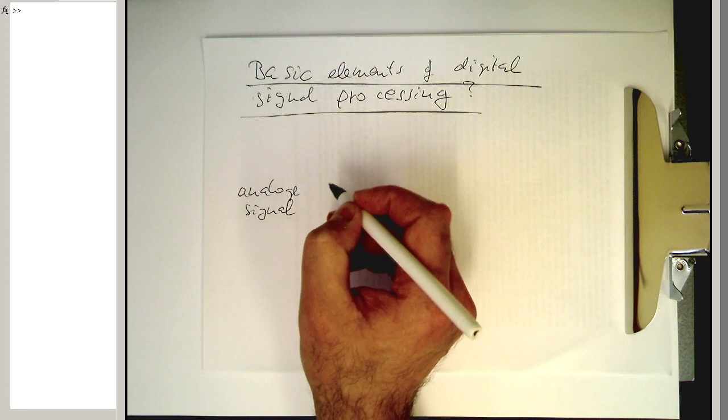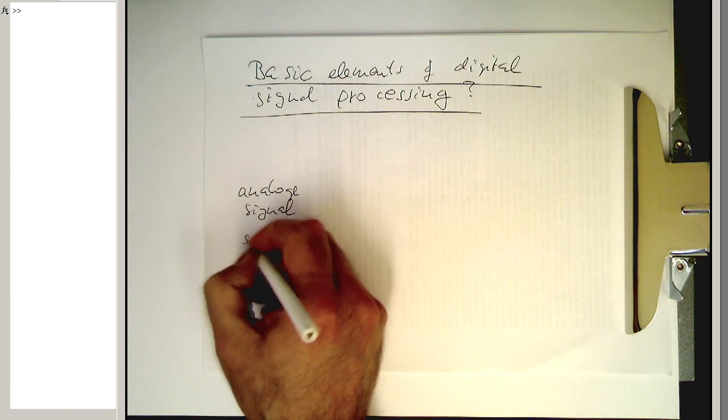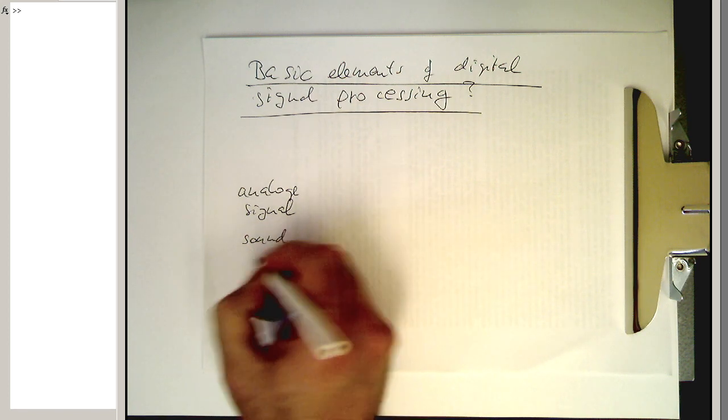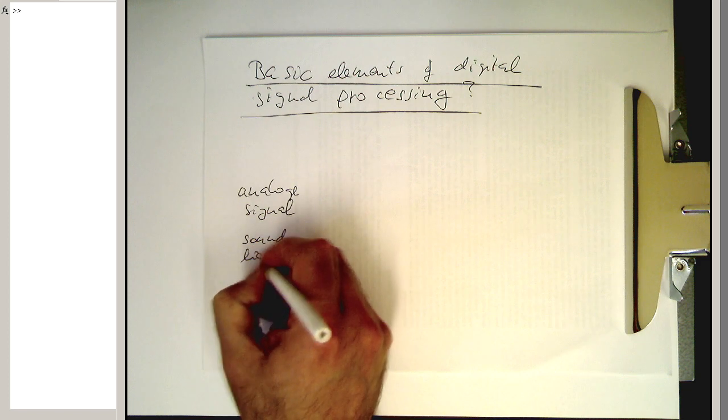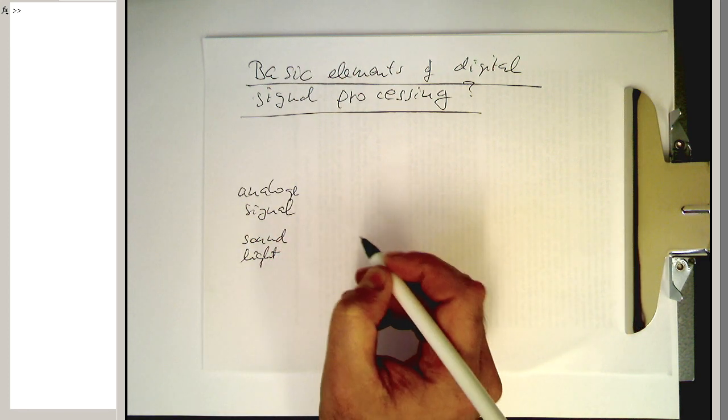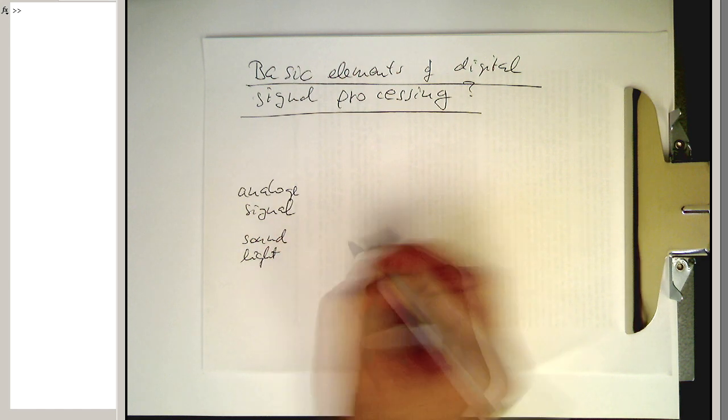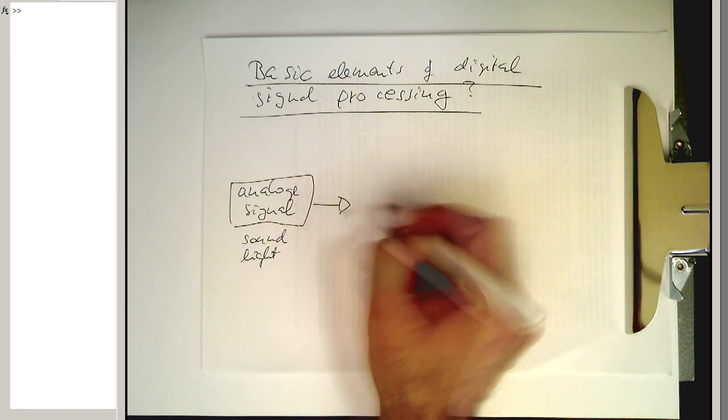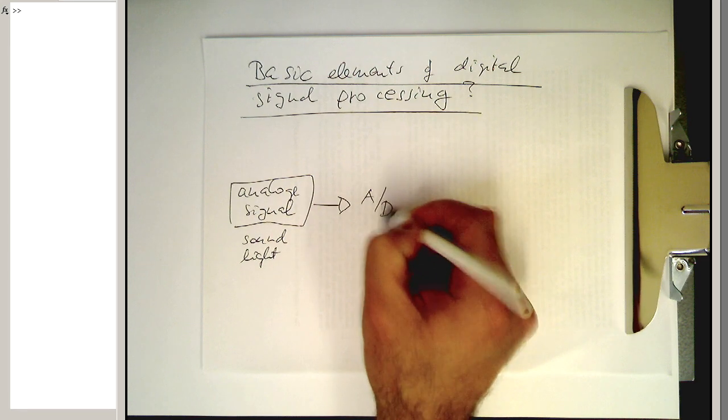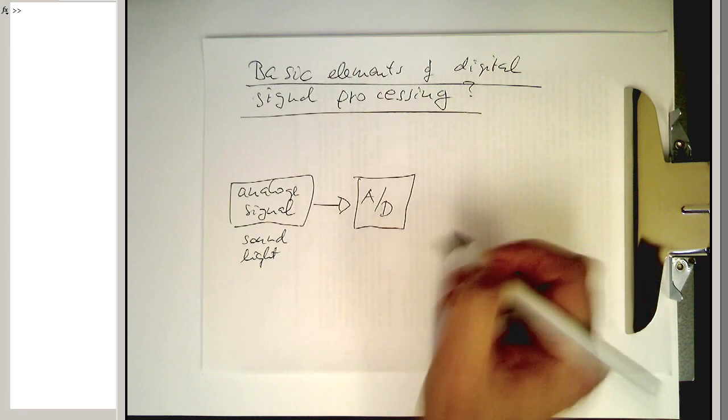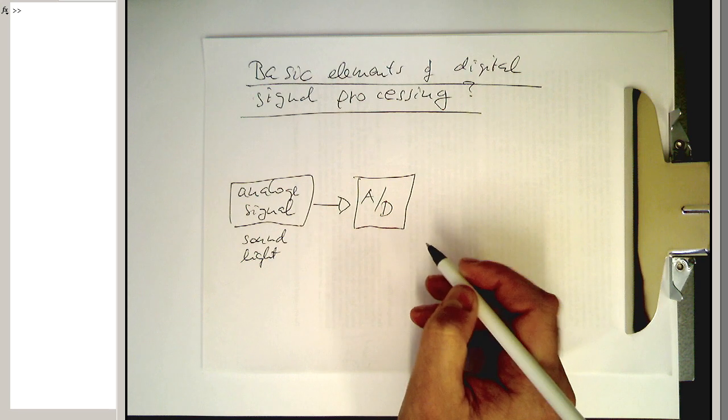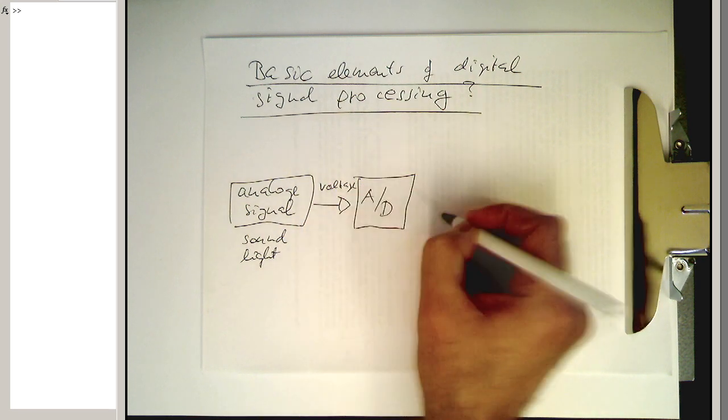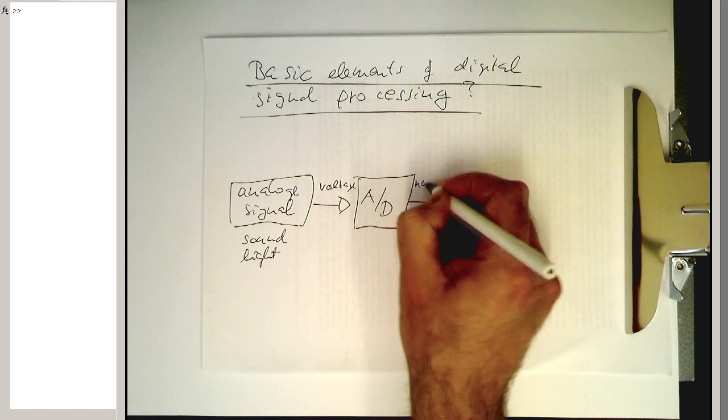We have some kind of analog signal. This is, for example, sound or let's say light intensity or something like that. The analog signal is just something in volts. Now we have a so-called analog digital converter. This converter turns the voltage just in a stream of numbers.